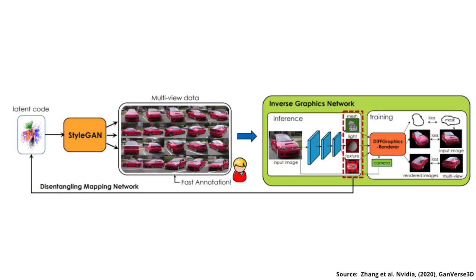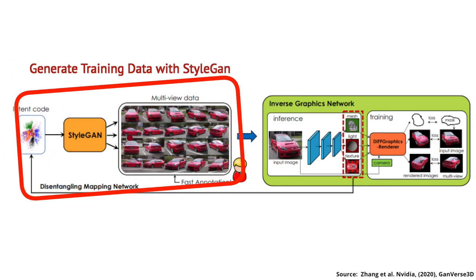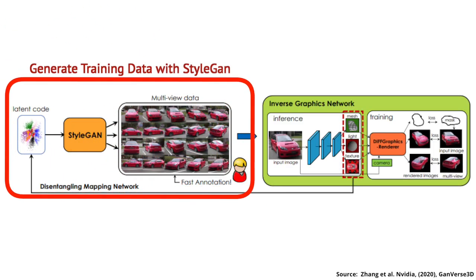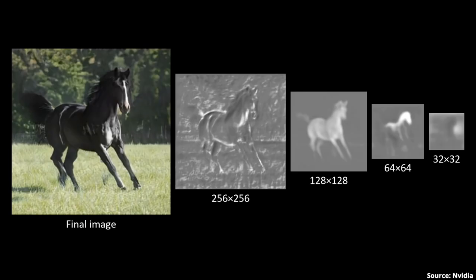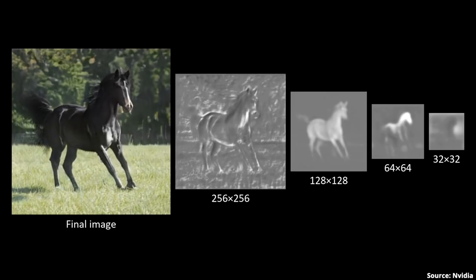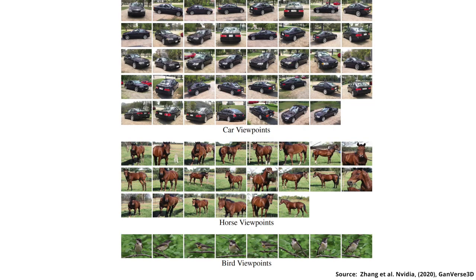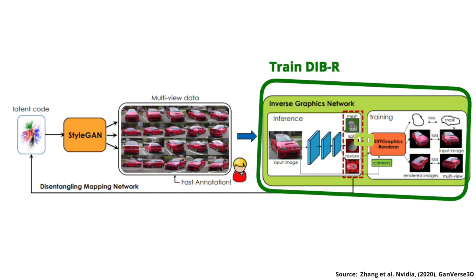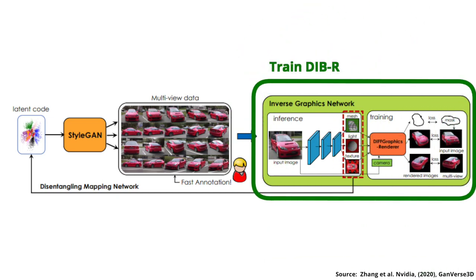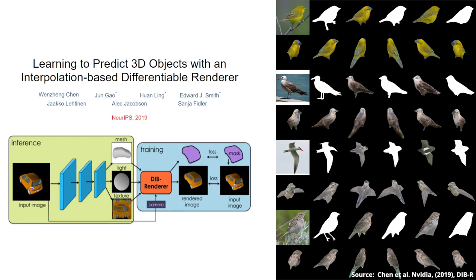There are two main parts to GANverse 3D. First, it uses a generative adversarial network, aka GAN, to generate photorealistic images of an object in 2D with a fixed number of viewpoints. It then feeds these images to train a state-of-the-art inverse graphics neural network, which was also previously developed by NVIDIA.